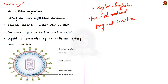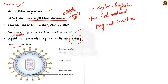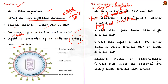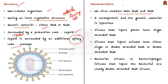Viruses are non-cellular organisms characterized by having an inert crystalline structure outside the living cell. A virus is made of a core of genetic material — either DNA or RNA — surrounded by a protective coat called the capsid, which is made up of protein. Sometimes the capsid is surrounded by an additional spiky coat called the envelope. No virus contains both DNA and RNA. Viruses that infect plants have single-stranded RNA, while viruses that infect animals have either single or double-stranded RNA or double-stranded DNA.